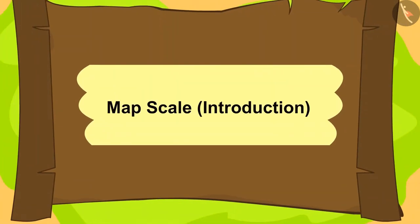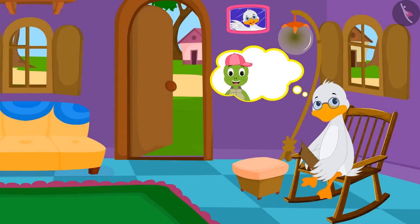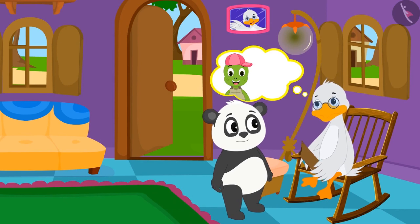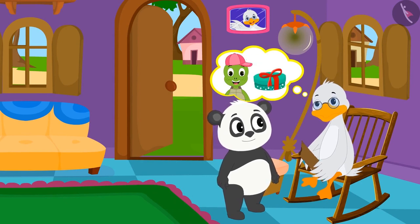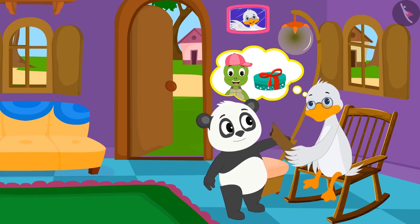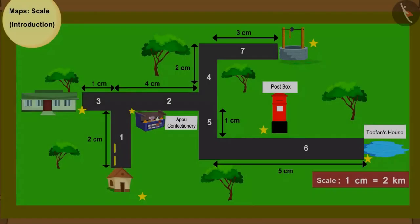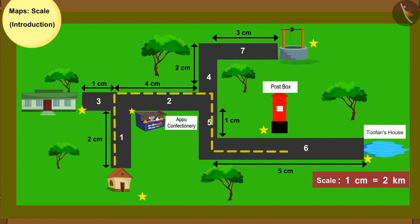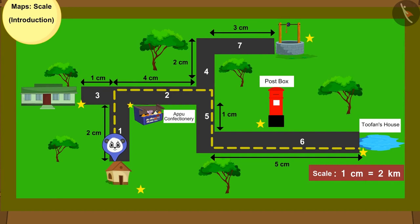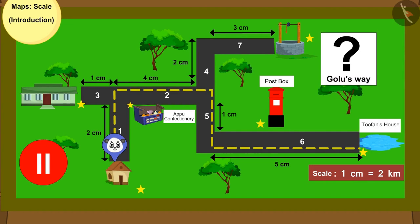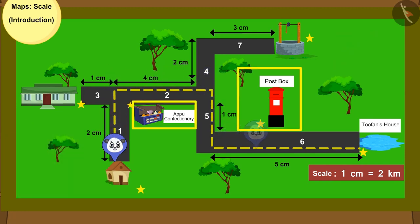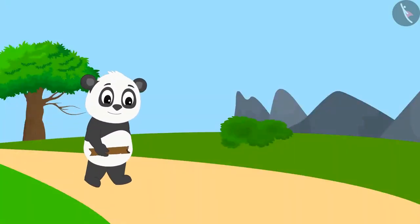Children, in this lesson, we will learn about the scales on maps. For Tufan Tortoise's birthday, Babel Duck Uncle sent some sweets with Golu Panda. Uncle gave Golu a map from his house to Tufan Tortoise's house, marked with a dotted line. Can you tell through which places Golu will pass on the way? You can pause the video to find the answer. Great kids, your answer is absolutely correct. Golu went on his way.